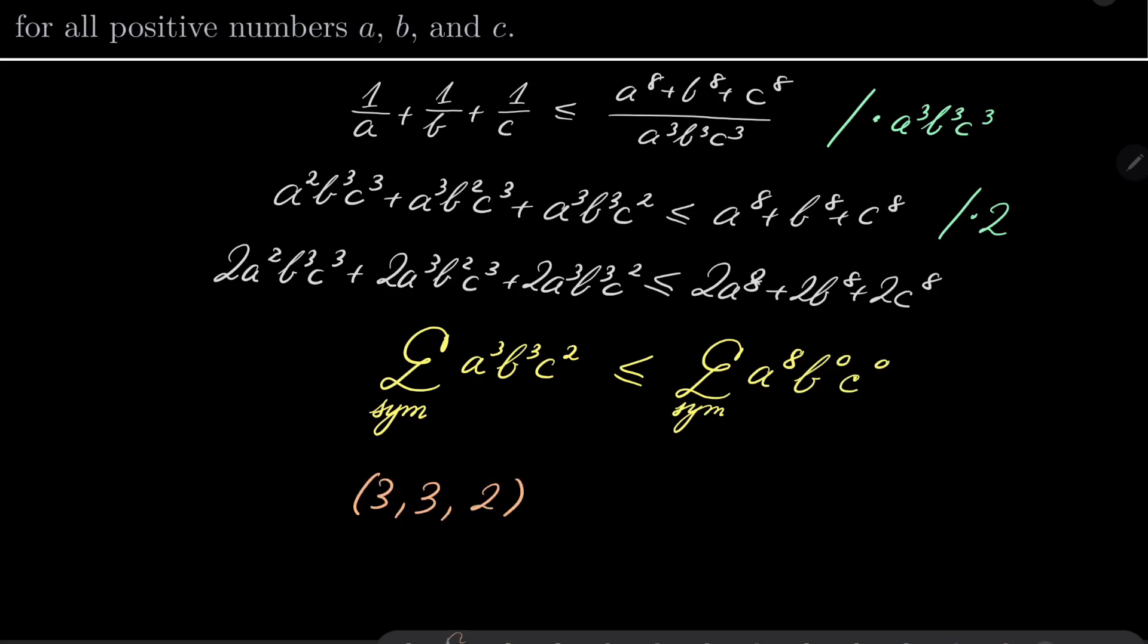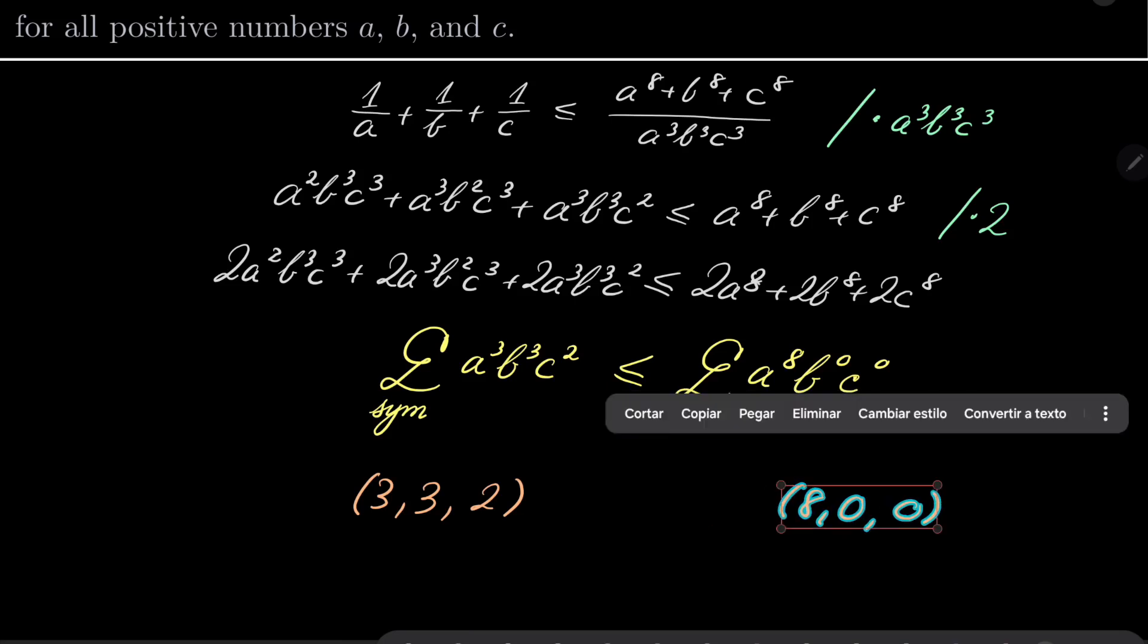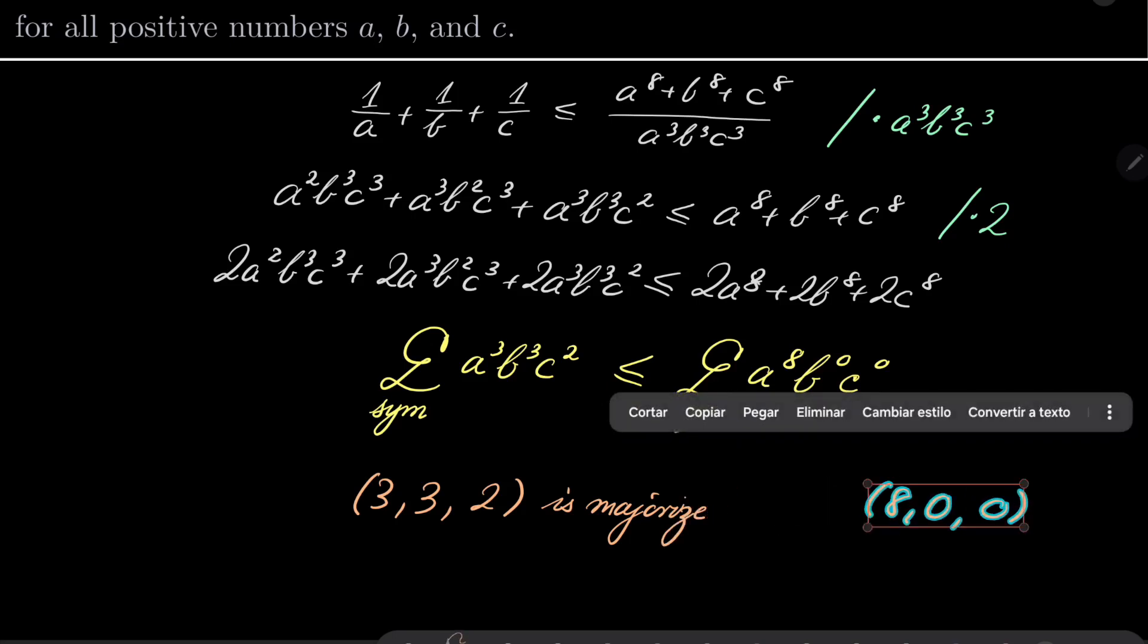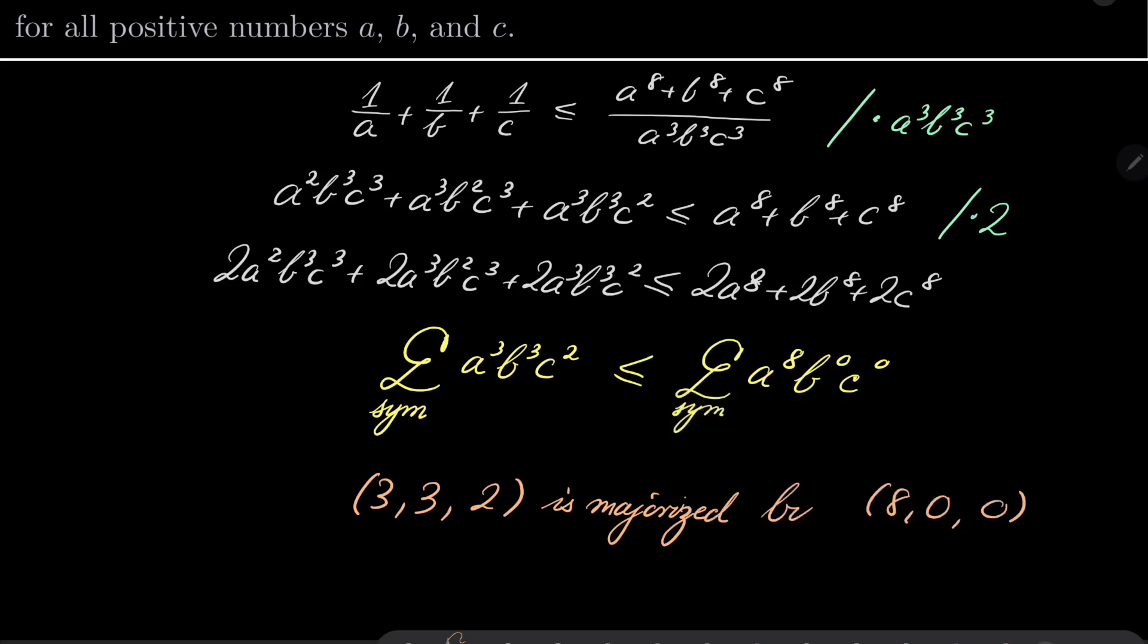3, 3, 2, 8, 0, 0. Well, this sequence is majorized by this sequence. So I will write it: (3,3,2) is majorized by (8,0,0).